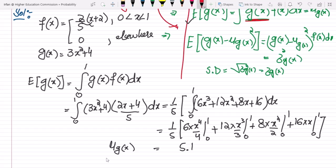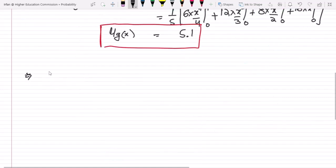This is the mu of g of x. Now in order to find the value of the variance, we need to find g of x square.